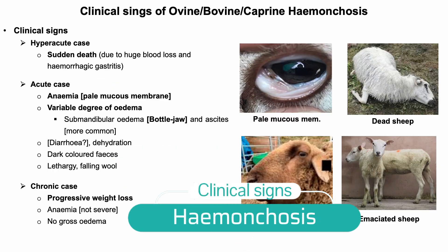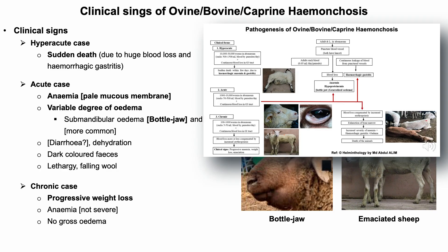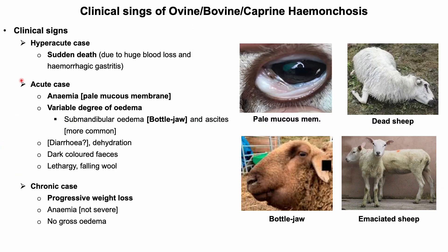Clinical signs of hemonchosis. There are three clinical forms of this disease. In the hyperacute form, there is sudden death of the animal due to massive blood loss and hemorrhagic gastritis. In acute cases, anemia, variable degrees of edema — particularly fluid accumulation in the submandibular space — and ascites are more common. Due to hemorrhagic gastritis, the color of the feces becomes dark. Overall, animals become lethargic with production loss. In chronic cases, progressive weight loss is observed, and anemia and edema are less commonly found.